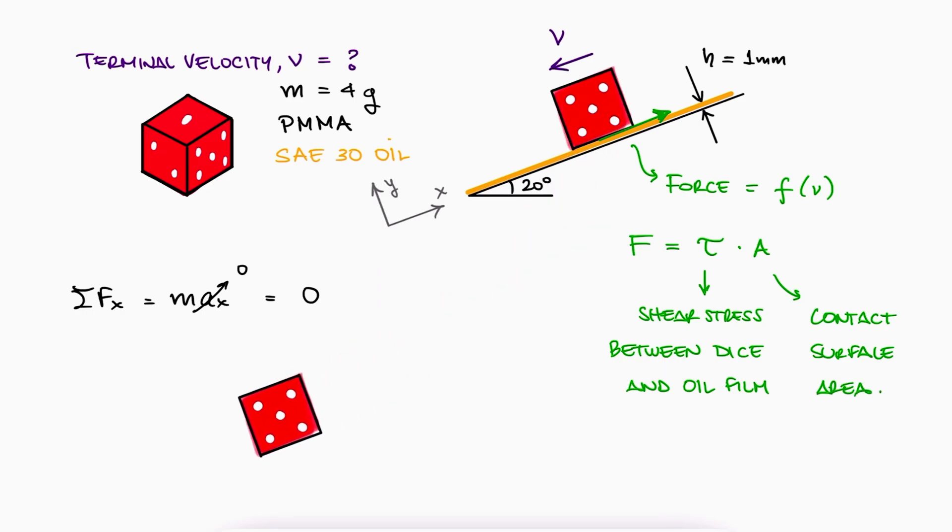The free-body diagram of the dice would have a weight going down, a normal force perpendicular to the surface, and a shear force from its interaction with the fluid parallel to the surface.